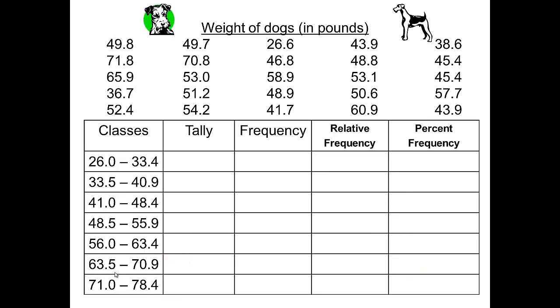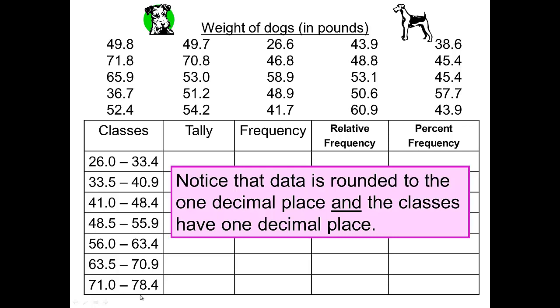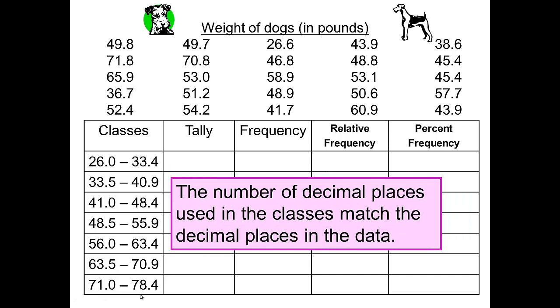You may want to pause here to take time to copy and create the table that we have or you may want to look to see if the PDF file is posted or that you have it in your notes. Notice that the data is rounded to one decimal place and the classes also have one decimal place. The number of decimal places used in the classes must match the decimal places in the data.